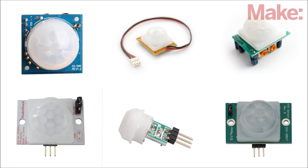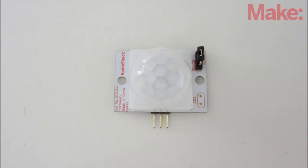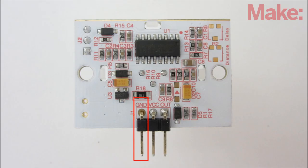There are a number of motion sensor modules that are designed to work with a microcontroller. This one that I picked up from RadioShack connects to the board with just three pins. Ground connects to a ground pin on the board, VCC connects to either 5 volts or 3.3 volts, and the out pin connects to any input pin on the board.